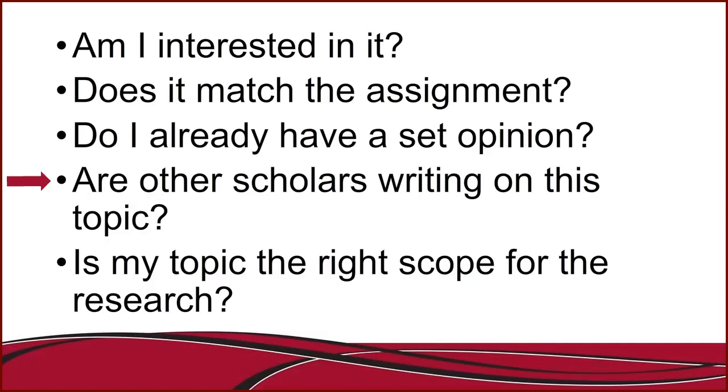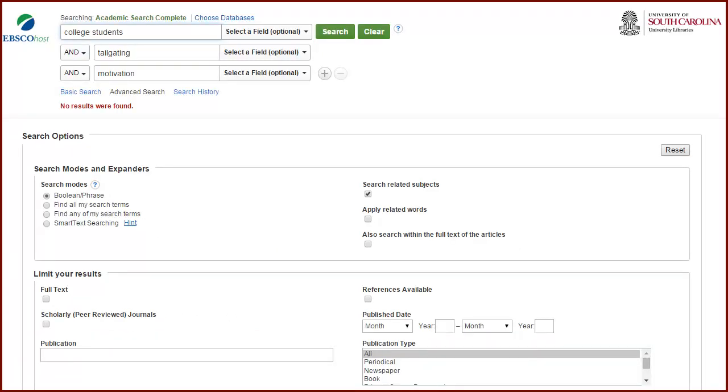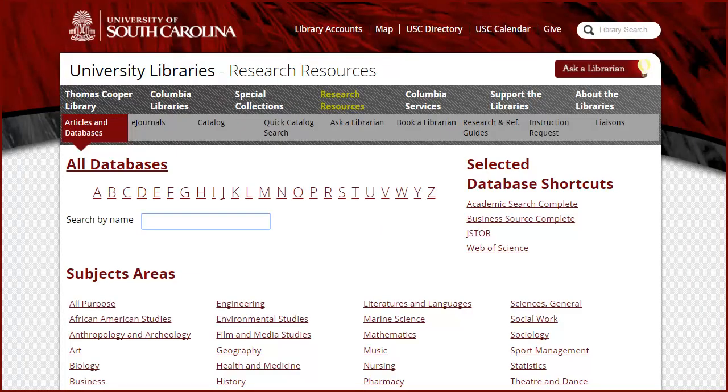Interest is important, but if there is no one talking about your topic, you'd have to conduct a study yourself to find evidence for your paper. Unless that's part of the assignment, you're making it harder than it has to be if you choose a topic no one else is writing about. For example, there is very little written on what motivates college students to tailgate. As interesting as it may be, how do you know if scholars are writing on your topic? Do a preliminary search in places you know scholarly writing is found. A general or related subject database would be a great place to start.